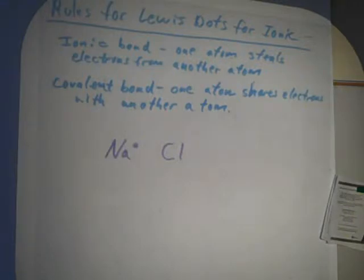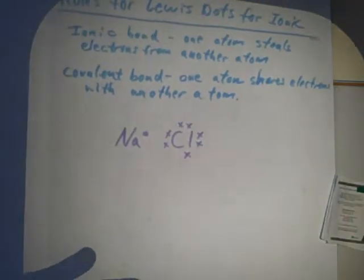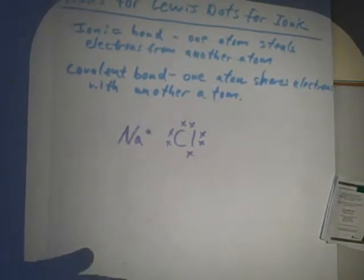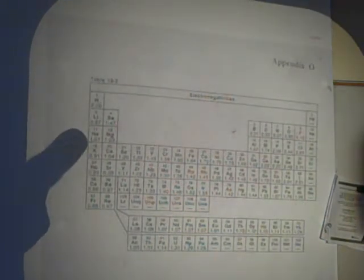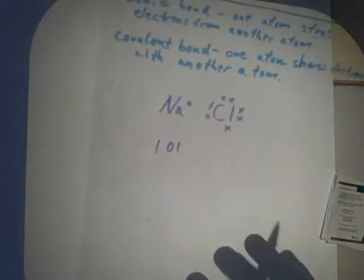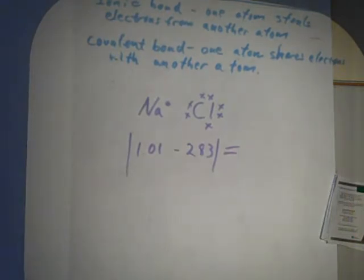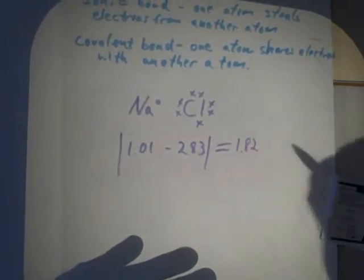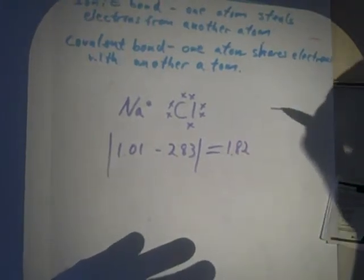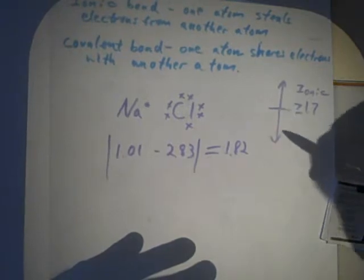So chlorine is in group 7A, 7 valence electrons. I'm going to use X's just to help us distinguish them. The electronegativity of sodium is 1.01. How do I know that? I went through PIMXO. Chlorine is 2.83. We take the absolute value of the difference. The difference comes out to be 1.82. If the difference is greater than or equal to 1.7, you are ionic. If you are less than 1.7, you are covalent.